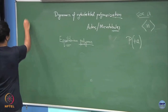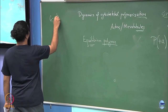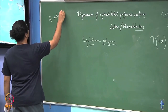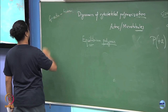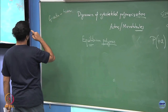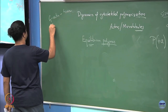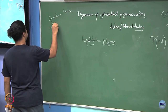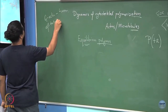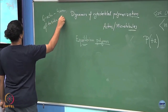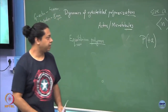G-actin typically has a size of around 4 nanometers, and this tubulin heterodimer — this alpha-beta tubulin — has a length of around 8 nanometers. So that is the order we are talking about.